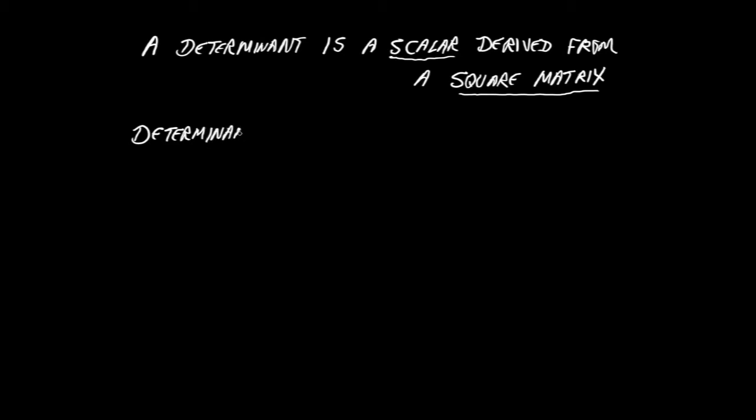A determinant is a scalar. It's just a number. It could be positive, could be negative, could be zero. And it's derived from a square matrix. A single number derived from an entire matrix. The determinant of M would be written with M with the modulus signs either side of it, even though it can be a negative number.